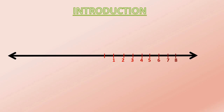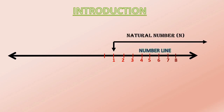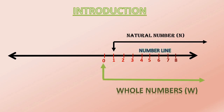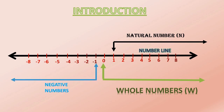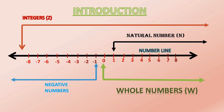In lower classes, we studied numbers like 1, 2, 3 and so on for counting. These numbers we called as natural numbers. If we add 0 on the number line, we can get the new collection of numbers called whole numbers. The numbers which are behind 0 are called negative numbers, and this whole collection is called integers.